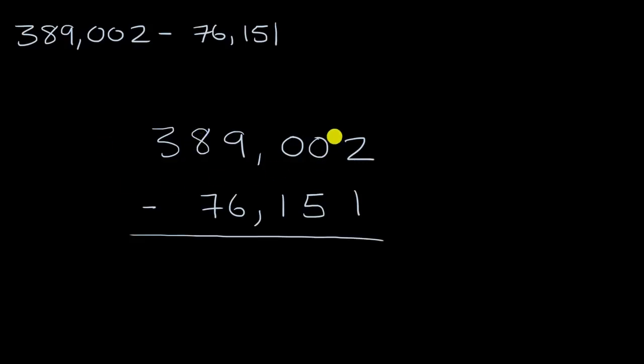So the first thing we might do is look at the ones place. Here I have two ones, and I'm gonna take away one one, so I'm gonna be left with one one. That was pretty straightforward.